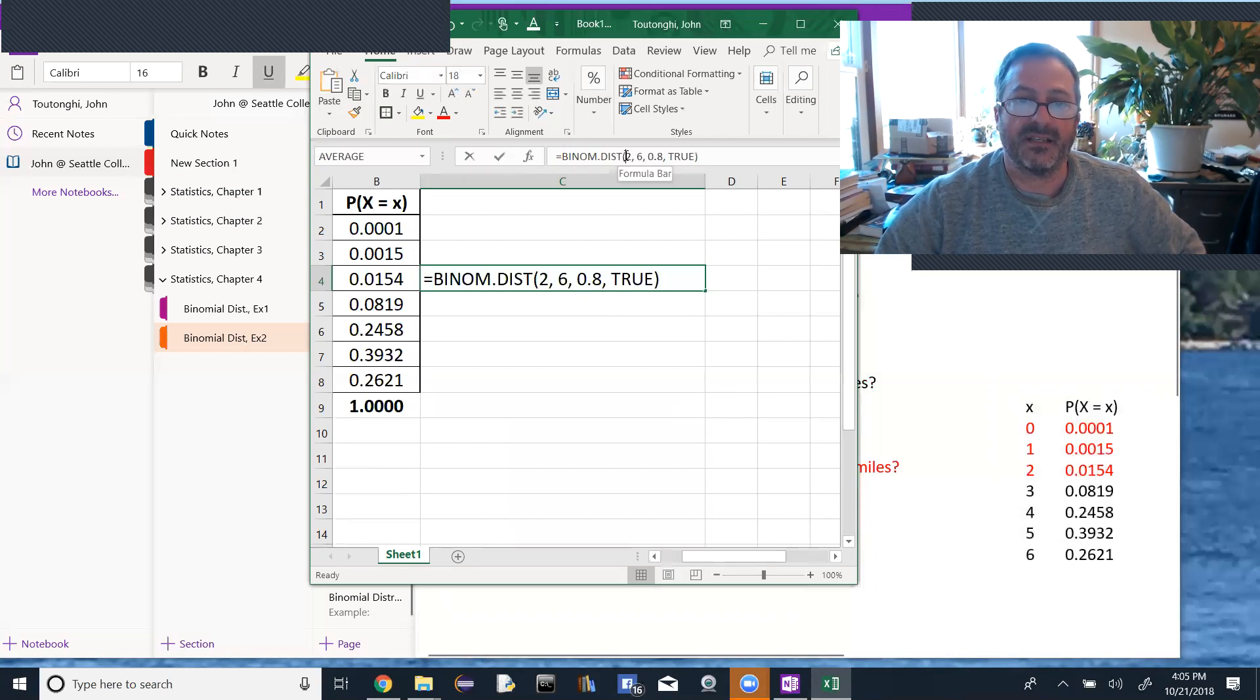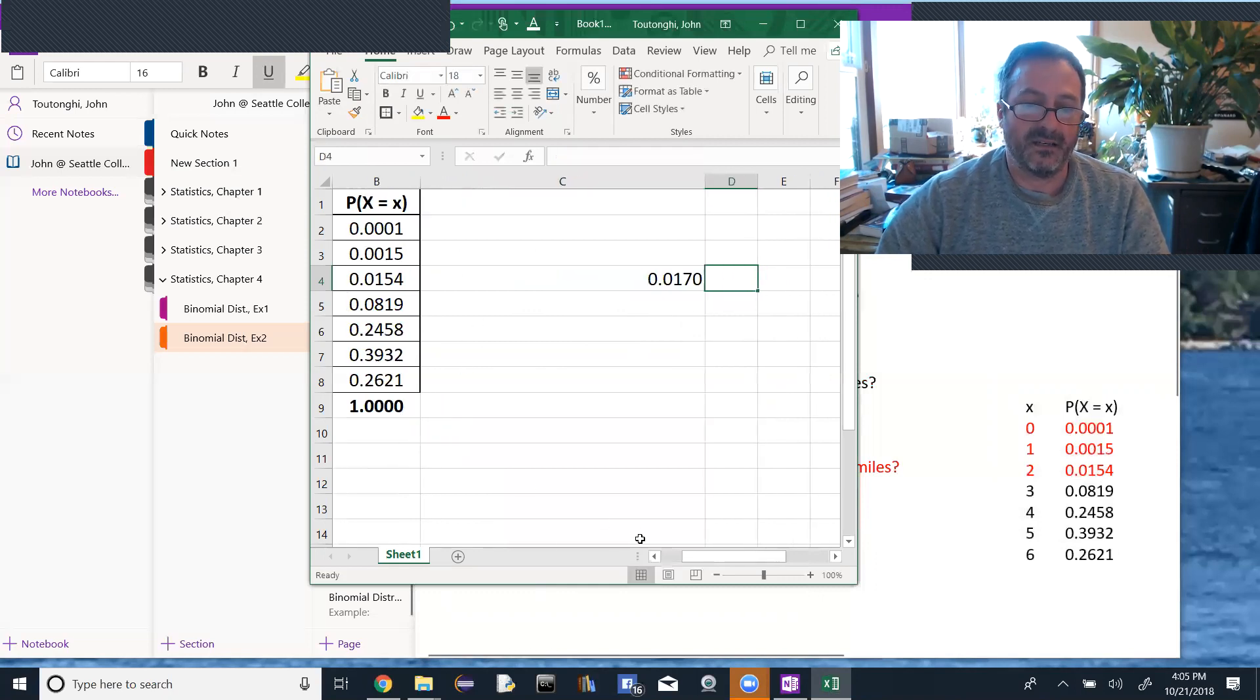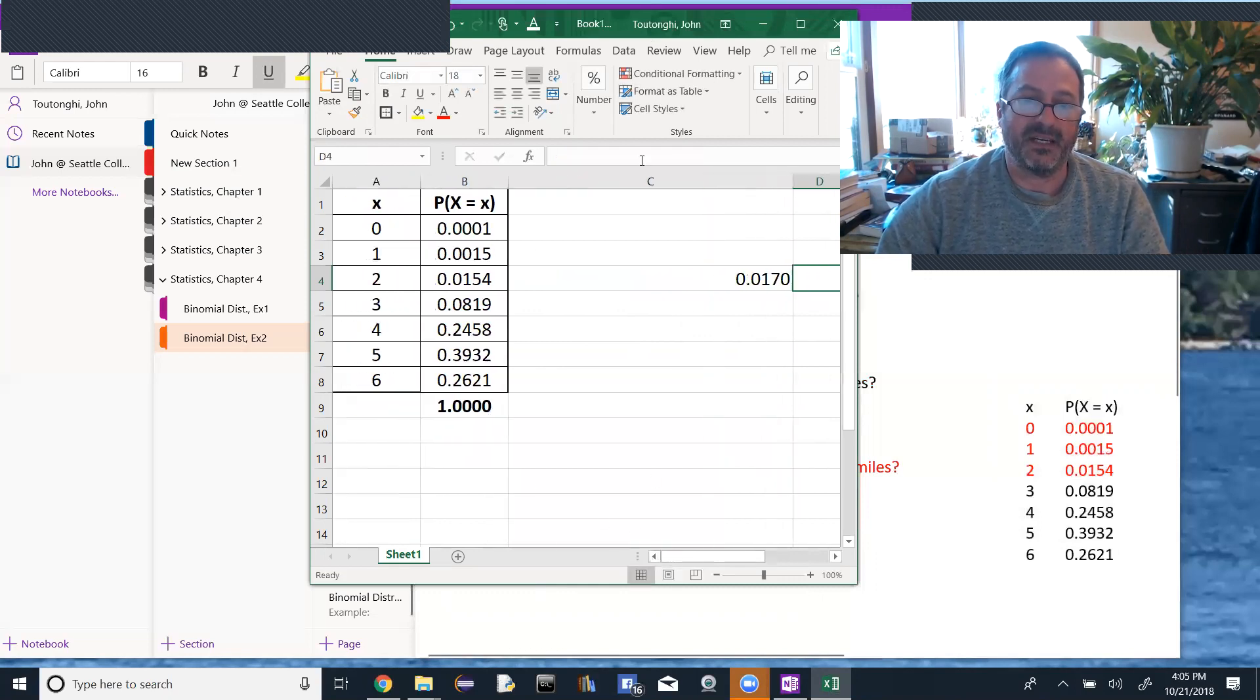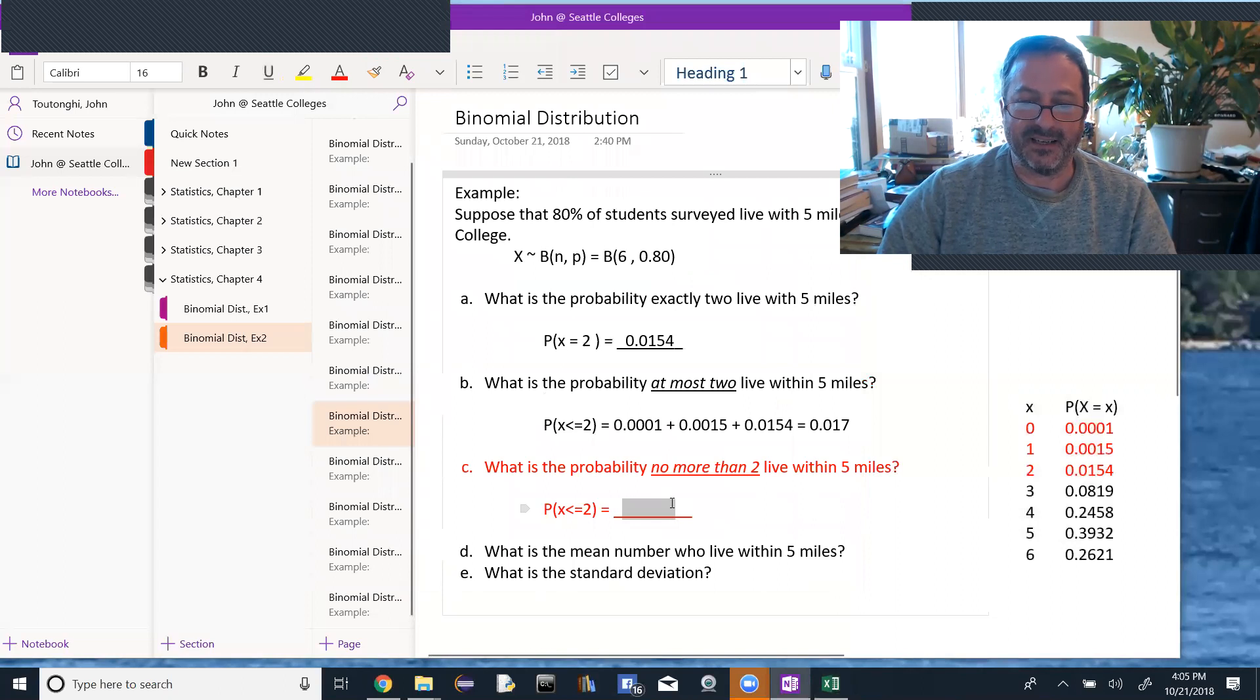So what we changed here is, this is the cumulative distribution. So that cumulative word got changed from false to true, and that is going to add everything up to and including the successes that I put in the beginning of the formula, so the two here. So I'd be adding these three cells up, which we did manually already, but you could imagine if you had to add a bunch of stuff manually, you wouldn't, you would use Excel. So you can either just add them up or you can use Excel, and the answer again, 0.0170.